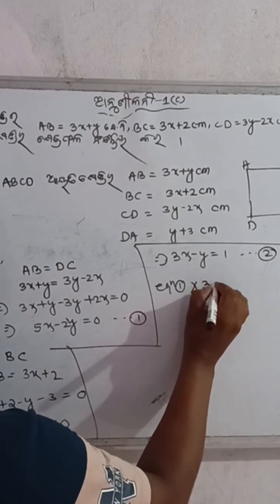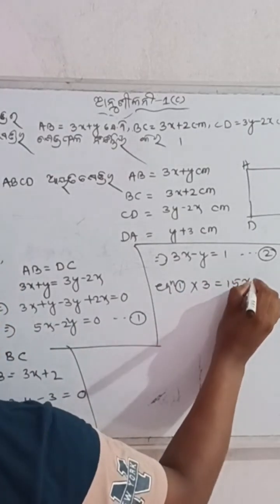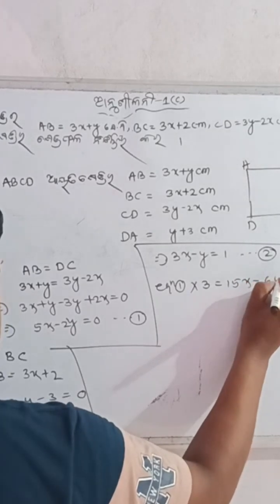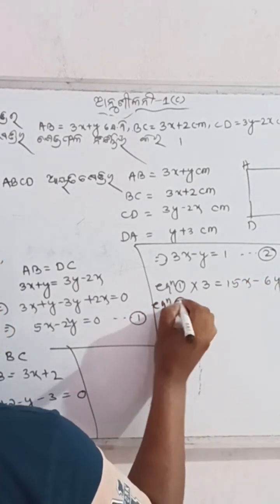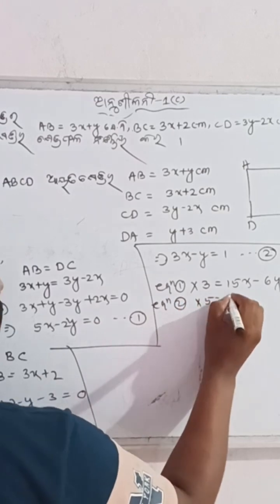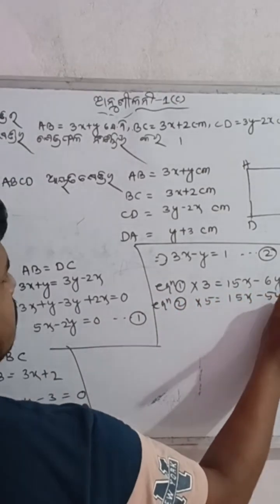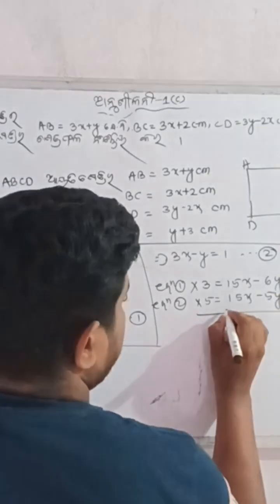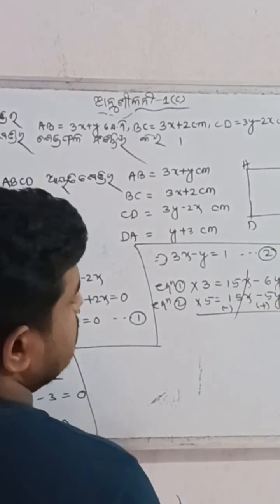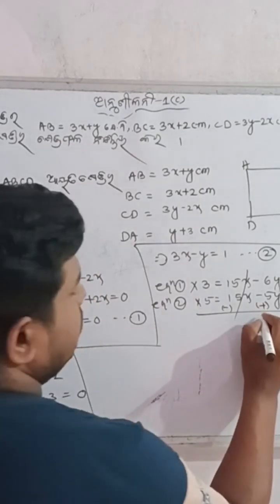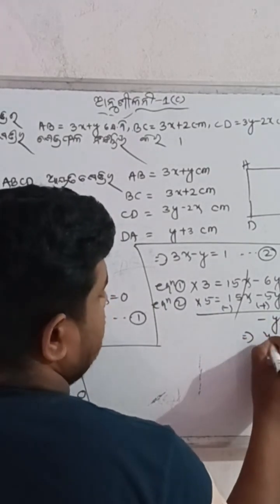This implies 3x minus 6y is equal to 0. This implies 3x minus 6y is equal to 0.